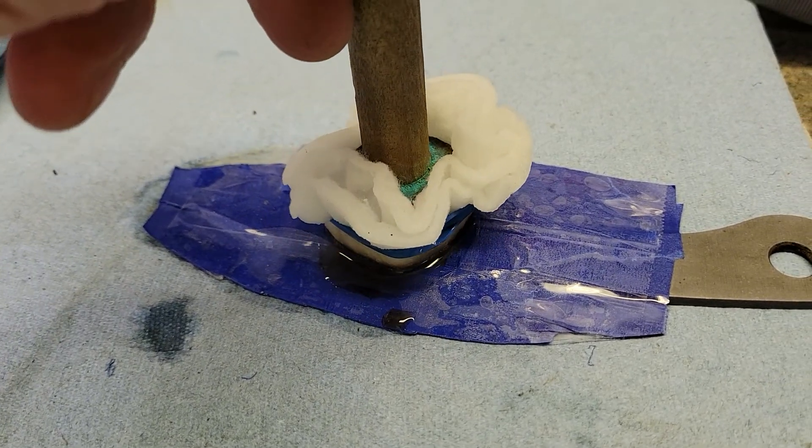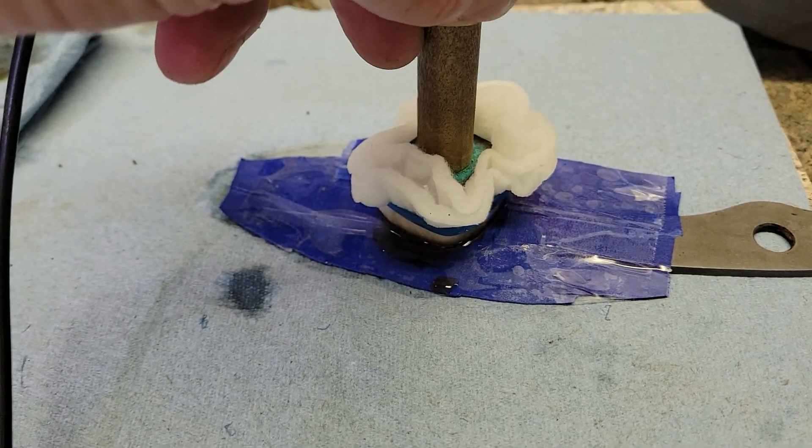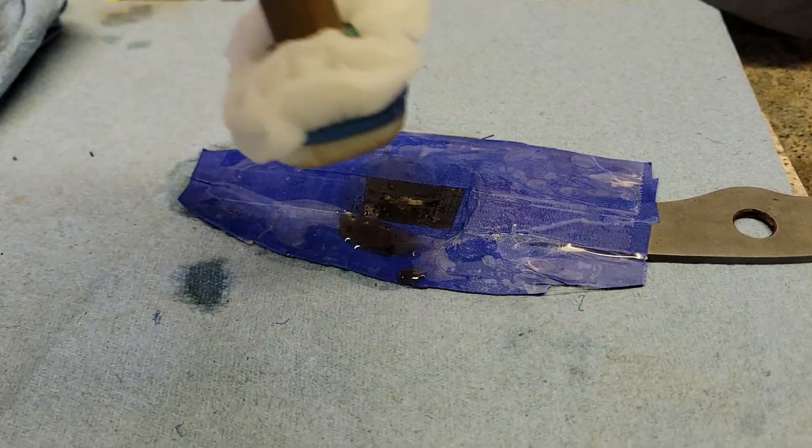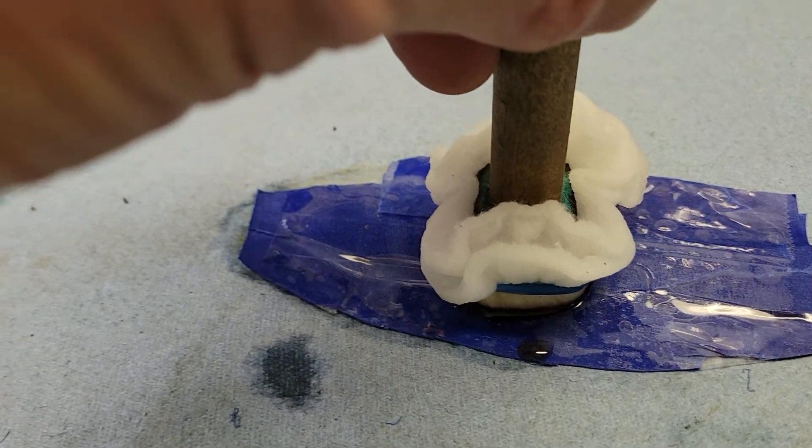When I add electricity to it, it eats away at the metal, and that's what causes the etch.